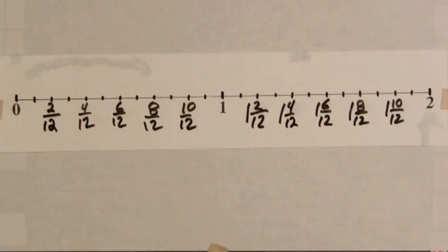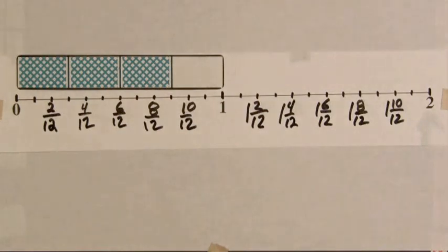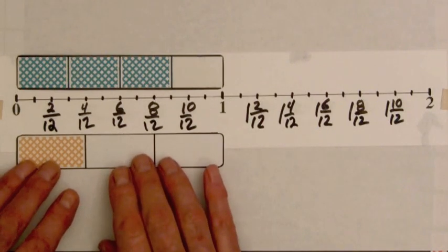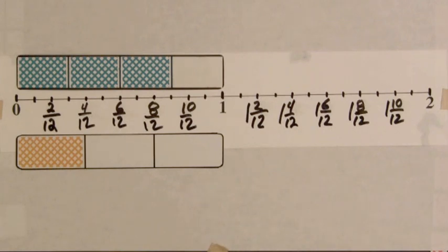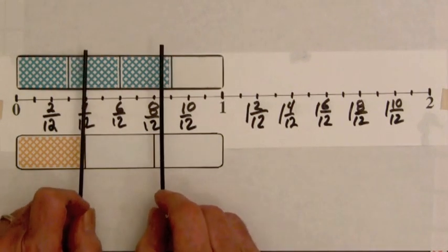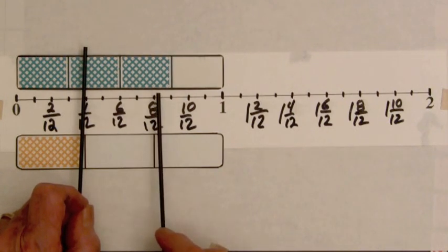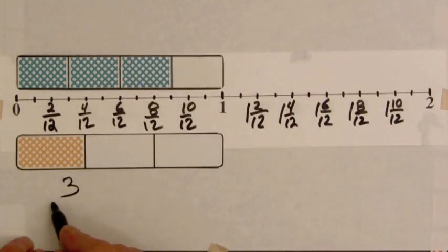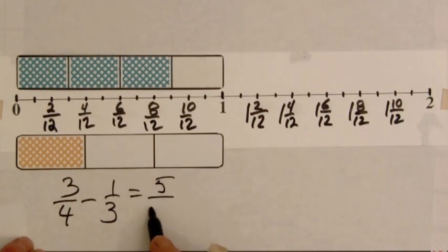For example, if we have the three-fourths bar and place it up here, we can see the shaded amount goes up to nine-twelfths. Then the second bar — say one-third — has a shaded amount up to four-twelfths. The difference between these two shaded amounts is five-twelfths. So we have the equation: three-fourths minus one-third equals five-twelfths.